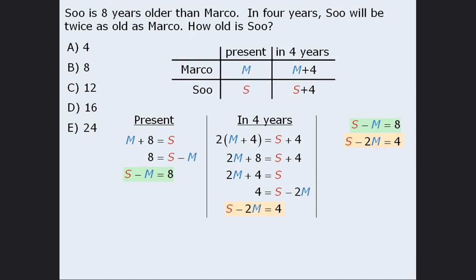At this point we have two equations. To solve this system, we can use either substitution or the elimination technique. To use the elimination technique, we subtract the bottom equation from the top equation. The S's cancel out, leaving us with M equals 4. So Marco's present age is 4. Since Sue is 8 years older than Marco, Sue's present age is 12, so the correct answer is again C. The solution using two variables takes a lot more time, so be sure to use multiple variables sparingly.